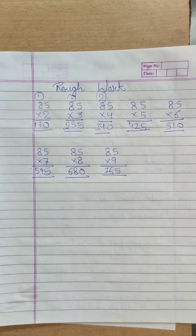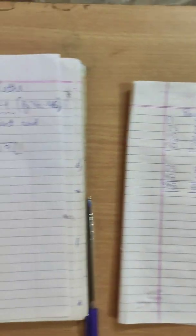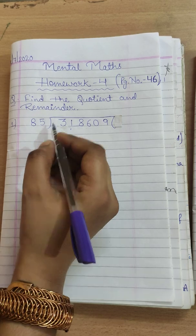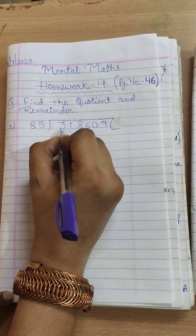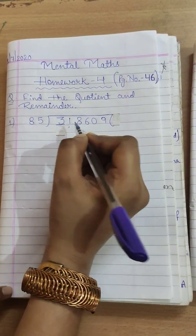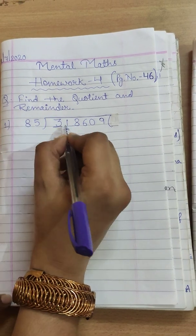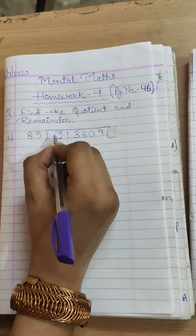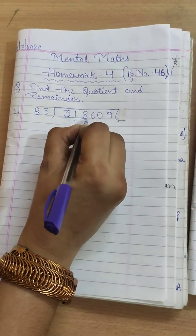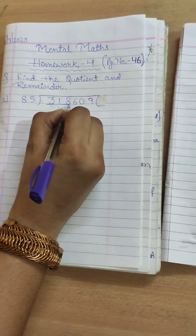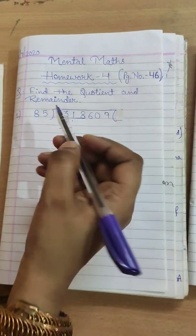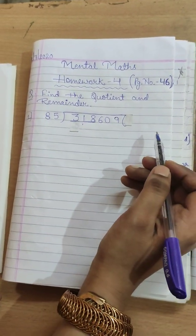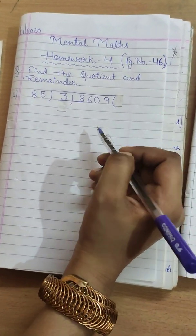So here's my table of 85. Now let's try to solve it as given in our question. 85. 3. The first digit is not coming in table of 85, so we will take first two digits, 31. But 31 is also not coming in table of 85, so we will take three digits. 318. So let's check.